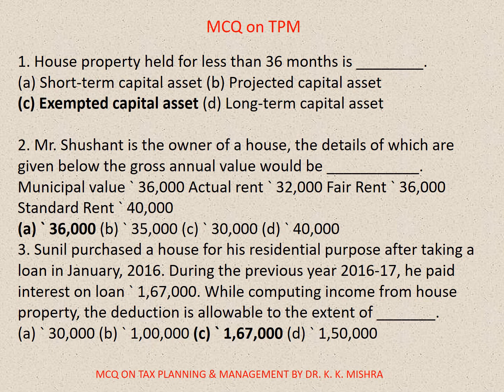Question number 2: Mr. Sushant is the owner of a house. The details are given below. Municipal value: 36,000; Actual rent: 32,000; Fair rent: 36,000; Standard rent: 40,000. The gross annual value would be — if you calculate, you will find 36,000. So correct option is A: 36,000.